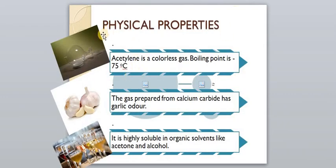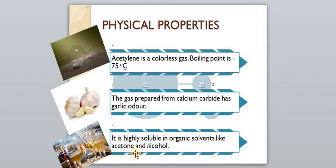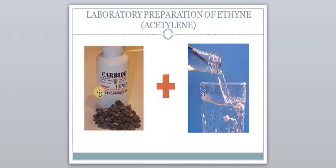Looking at the physical properties: acetylene is a colorless gas with a boiling point of minus 75 degrees Celsius. The gas prepared from calcium carbide has a garlic odor. It is highly soluble in organic solvents like acetone and alcohol, and partially soluble in water.